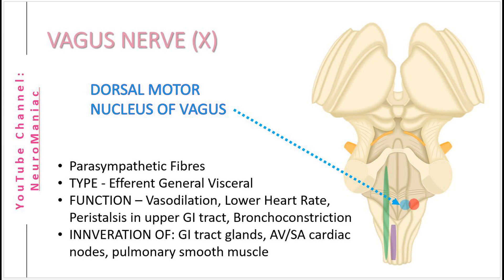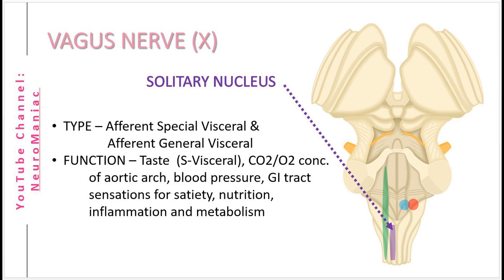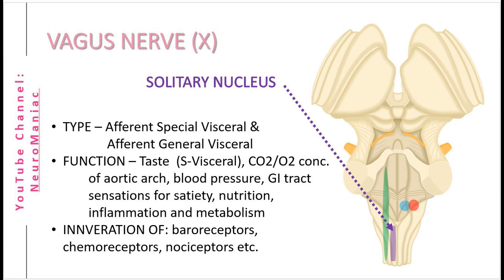Furthermore, these fibres supply the cardiac AV and SA node to lower heart rate, and lastly provide involuntary innervation to smooth muscle within the lungs for bronchoconstriction. The visceral sensory fibres from the solitary nucleus tract are efferent special visceral fibres that assist with some taste perception from the epiglottis and posterior tongue. However, the efferent general visceral fibres carry information about blood pressure as well as oxygen and carbon dioxide concentration from the aortic body. Sensory information is also transmitted from the lungs, stomach, liver, kidney, intestines and colon.